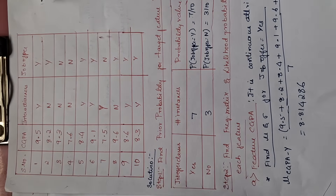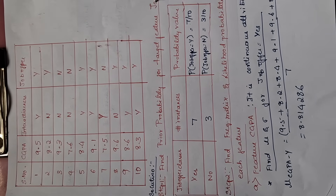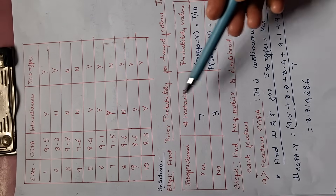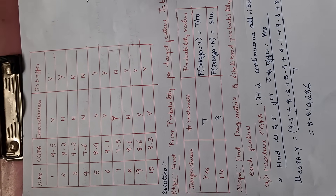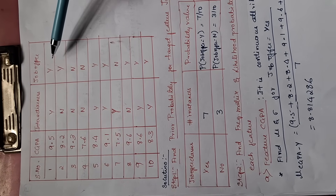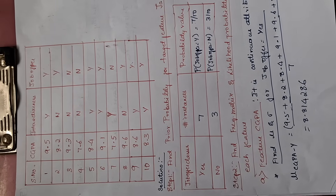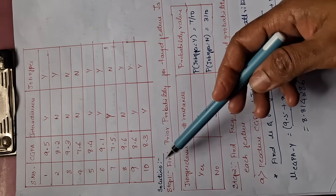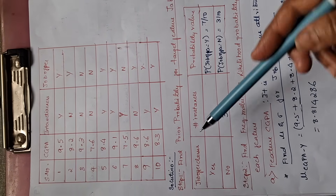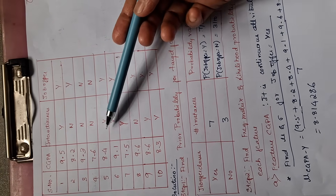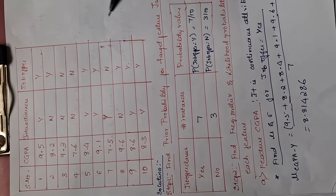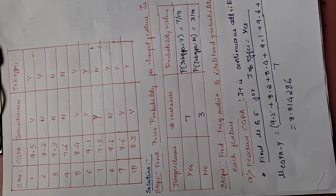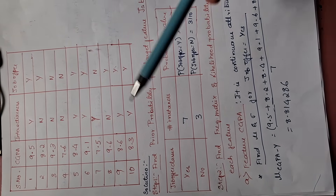Now let's start the problem. This is the training dataset which is given. We have 10 data instances with two attributes: CGPA and interactiveness. The target class is job offer. CGPA is a continuous value whereas interactiveness is a discrete value. Let's start the problem.